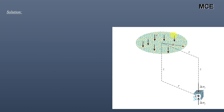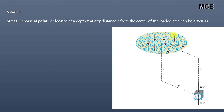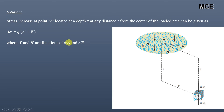The vertical stress increase at point A located at depth Z and radial distance r from the center of the loaded area is given by the formula: delta sigma Z equals Q multiplied by (A prime plus B prime). A prime and B prime are functions of Z/R and r/R, where Z is the depth, R is the radius of the circular area, and r is the radial distance of the point from the center. These functions A prime and B prime are calculated from Alvin's table, which will be shown in the next slide.